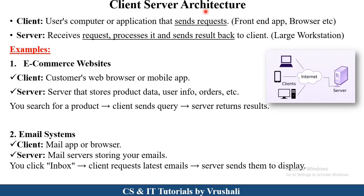The next topic is client-server architecture. There are three components: clients, server, and the network. Clients are user computers, user mobiles, or any front-end application that sends requests to the server. On the server side, the server receives the client request, processes it, and sends the accurate result back to the client. In client-server architecture, the server acts as a large, powerful workstation.